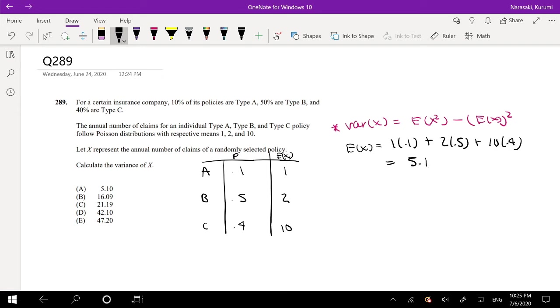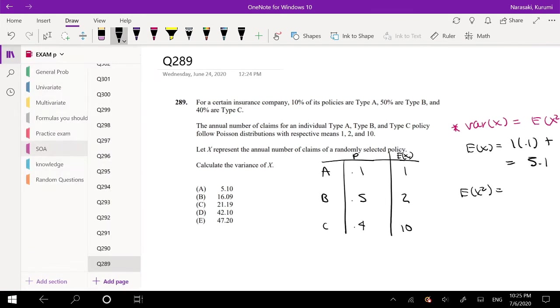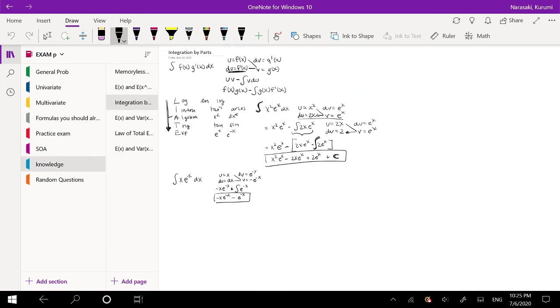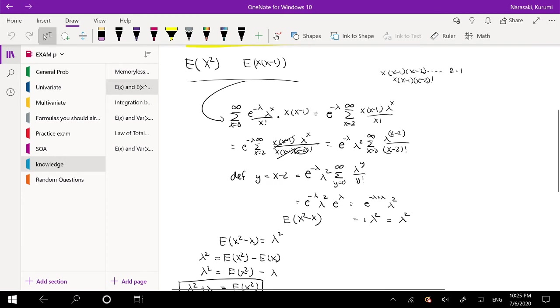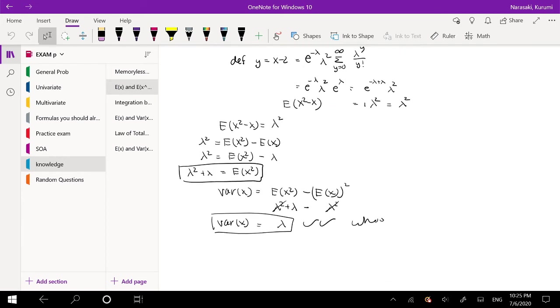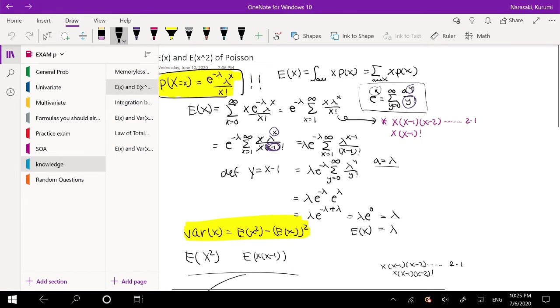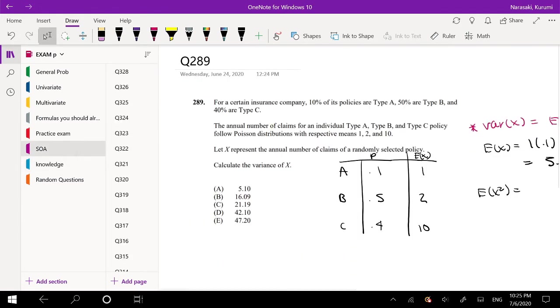Okay, and for E(X²), we proved in my other video - let me find it - is this Poisson? Yeah, so we proved that E(X²), the second moment, is lambda squared plus lambda for Poisson distributions. So using that...